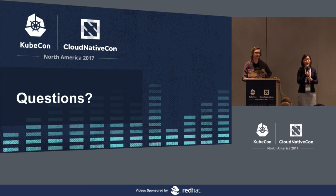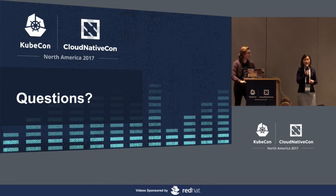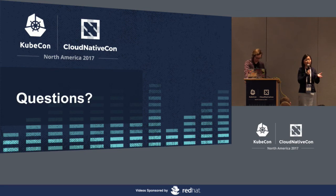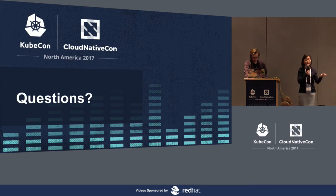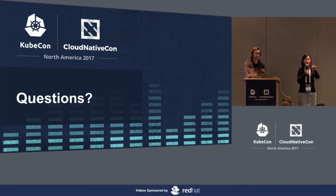OPA is embedded as a library inside of Mixer, but Mixer does a lot of caching, and so does the Envoy filter for Mixer. On the Envoy proxy side, we have a lot of caching on the Mixer side as well. OPA can be embedded either into Mixer or on the Envoy side. In this case, we integrated with Mixer because Mixer is more extensible — it's actually designed for extensibility, so it's easy to integrate any other policy engine into Mixer.